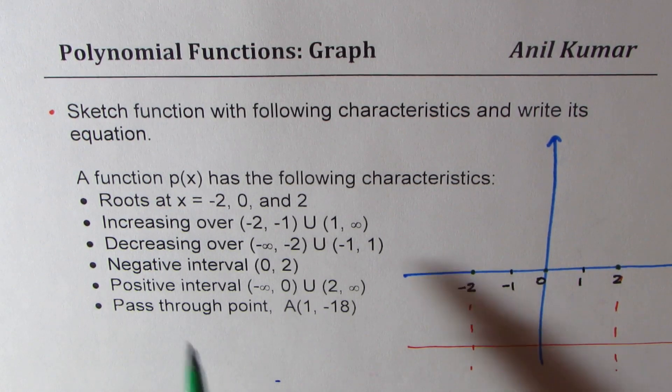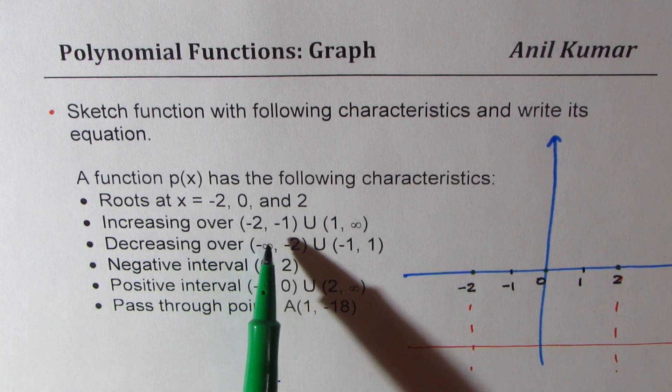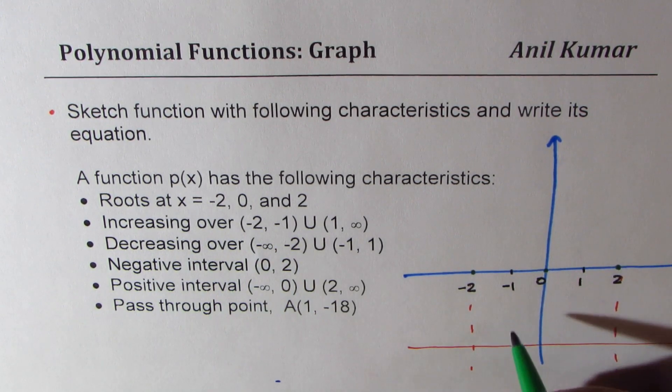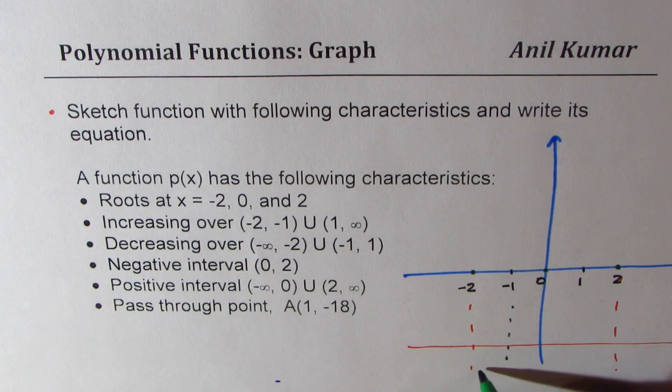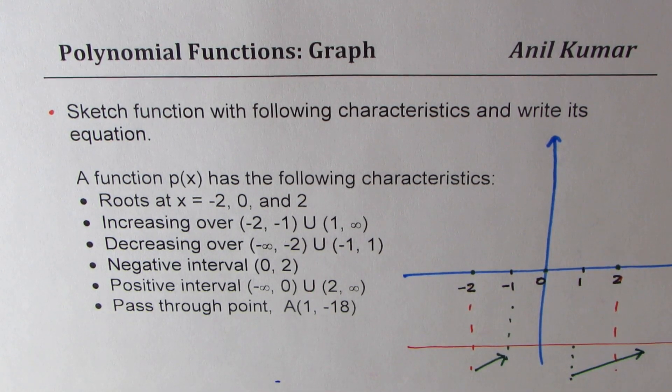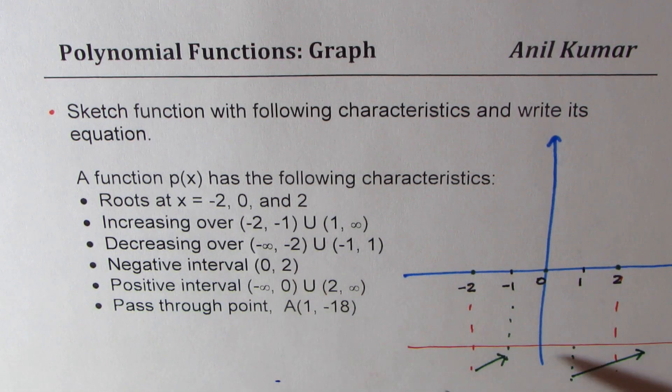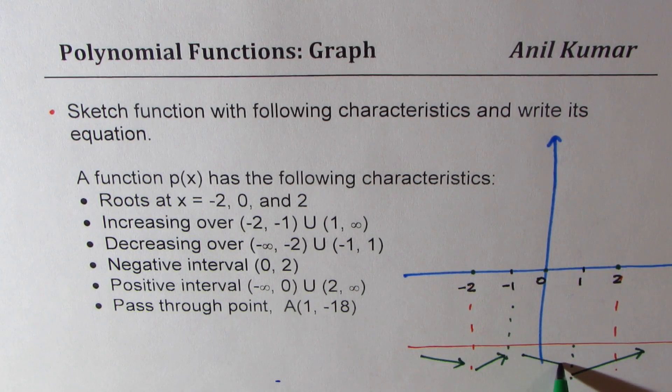So it is saying that increasing over minus 2 to minus 1, that means in this interval the function is increasing. And from 1 to infinity, it is also increasing in this interval. Decreasing in the rest of it. So here it is decreasing, and it is decreasing in this portion.